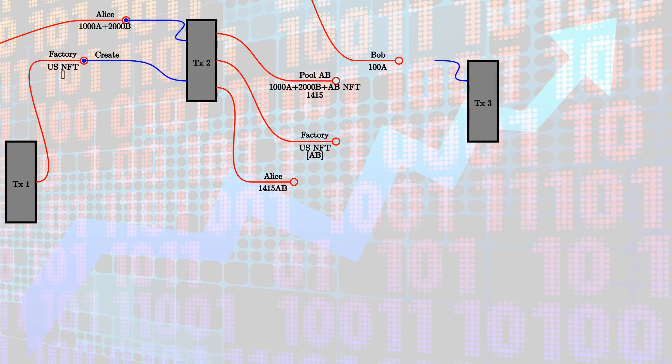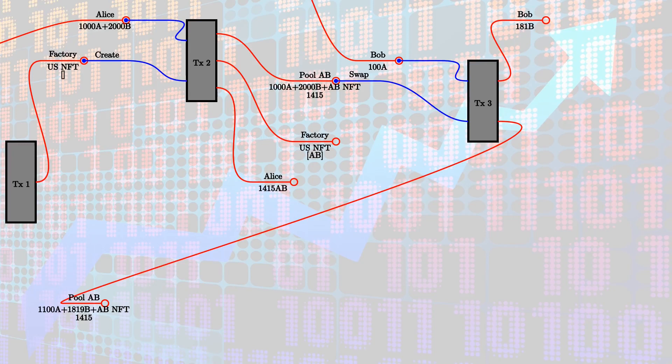Now that the liquidity pool has been set up, other users can use it to swap. Let's say Bob wants to swap 100 A against B. He creates a transaction with two inputs — the 100 A he wants to swap and the pool with the swap redeemer — and two outputs: the B's he gets in return (in this example 181 B's) and the updated pool. The pool now has the 100 A Bob provided — so 1100 A — and 181 fewer B's. It still has the NFT identifying the pool and the datum hasn't changed because the amount of liquidity tokens minted hasn't changed.